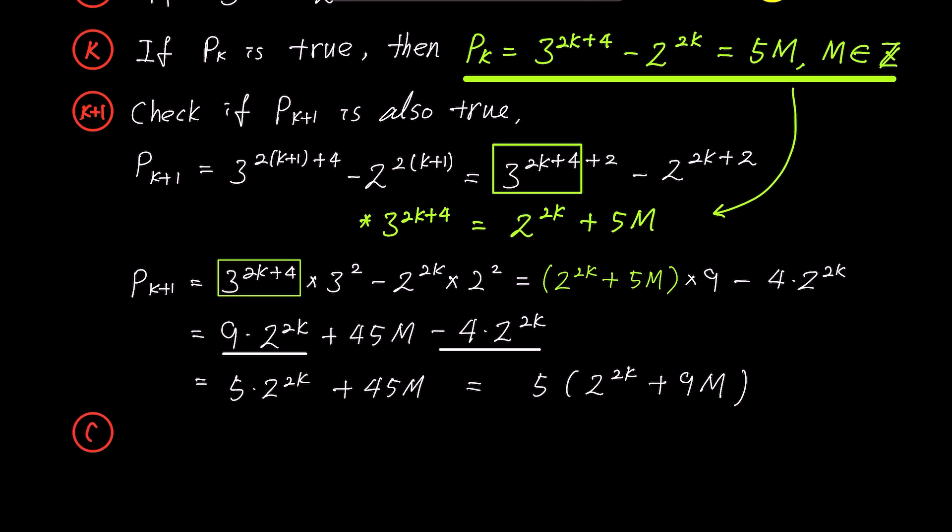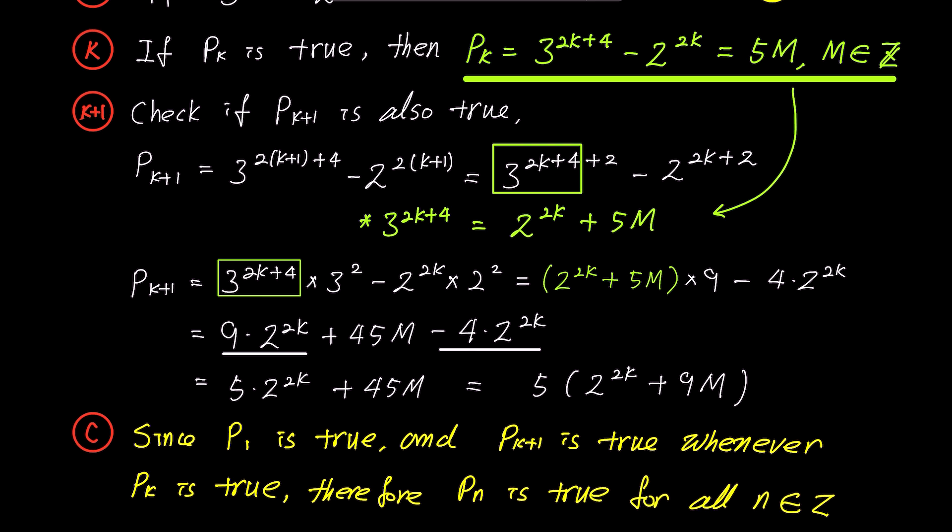Finally, in step 5, we write our conclusion. Since p1 is true and pk plus 1 is true whenever pk is true, therefore, pn is true for all positive integers n. By starting with the given expression and naming it pn, we made the problem solving process smoother, and our conclusion is concise.